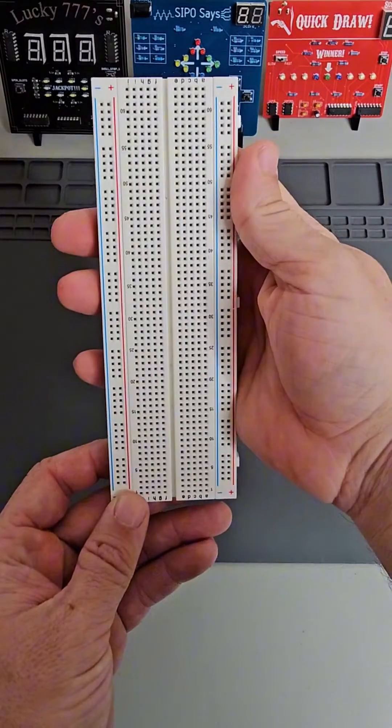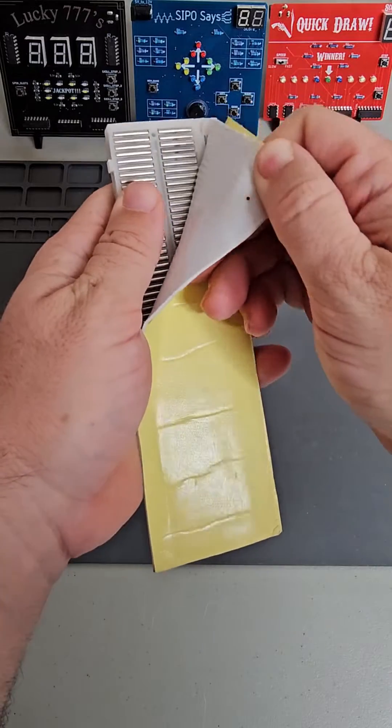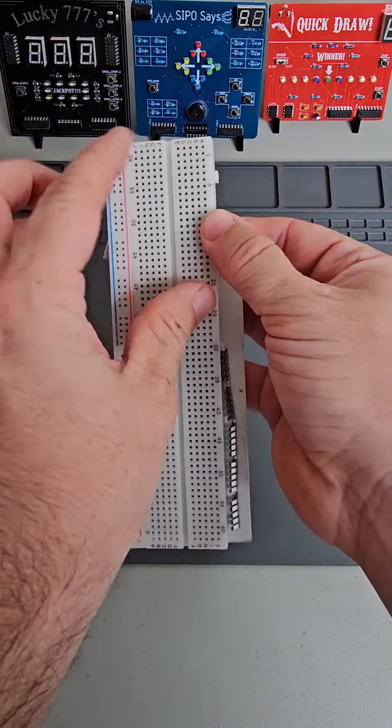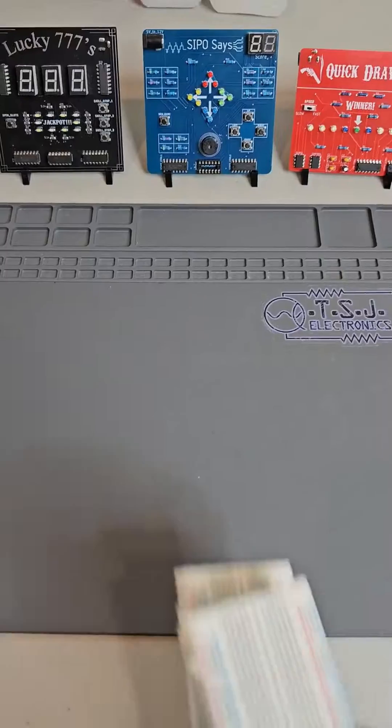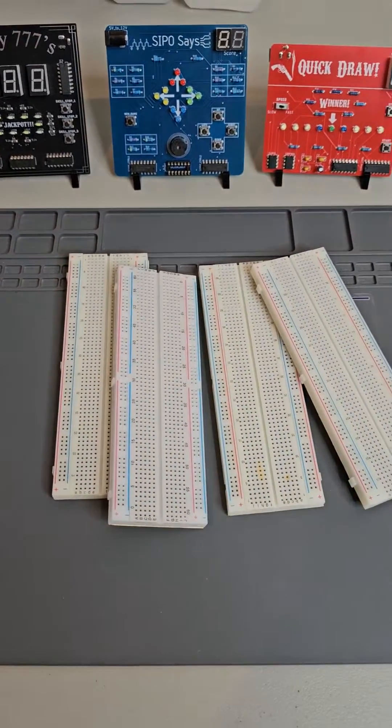First up is our breadboard. The breadboard has conductive traces inside that allow us to easily create circuits for learning and prototyping. I recommend a standard 830 point breadboard. Grab a 2 or 4 pack if you can because having a few extras is always helpful.